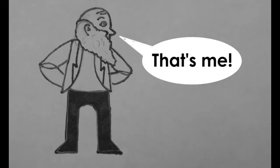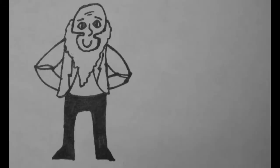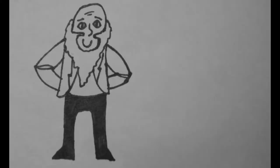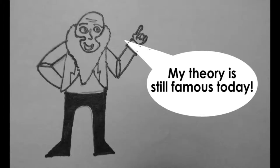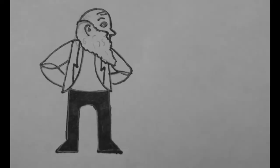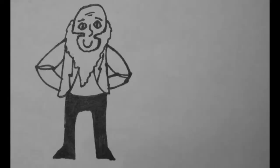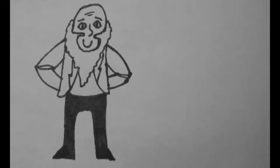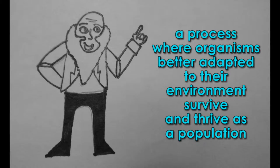Charles Darwin was an English naturalist best known for his discoveries and relations to adaptation and descent, as well as forming his own theory of evolution. Darwin's theory of evolution was a general overview of how life seems to have adapted over time. Included in his theory are the multiple facets of natural selection, which is a process where organisms are better adapted to their environment and survive and thrive as a population.